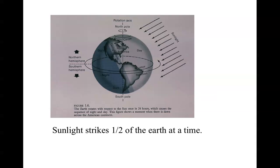At any one time, sunlight strikes half the Earth, leaving one half in sunlight and the other half in darkness. In this particular illustration, we see a time of year which is the northern hemisphere summer, where the polar axis of the Earth is pointed a bit towards the sun, so the light is striking more in the northern hemisphere than the southern hemisphere. The Earth turns, as you see in the illustration, from west to east, and the sun then appears to move from east to west across the sky throughout the day.